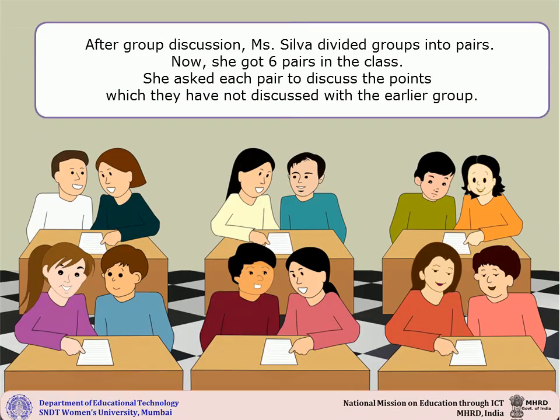After group discussion, Ms. Silva divided the groups into pairs, giving her 6 pairs in the class. She asked each pair to discuss the points which they had not discussed with the earlier group. She also asked them to add, cut, and rewrite the points wherever necessary. In the end, they were expected to make a list of points they discussed. Therefore, in the second step, students paired up to discuss.